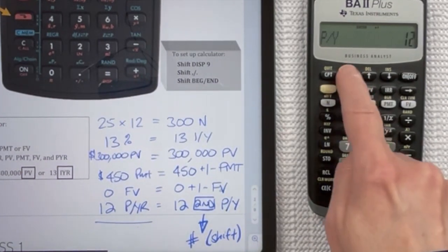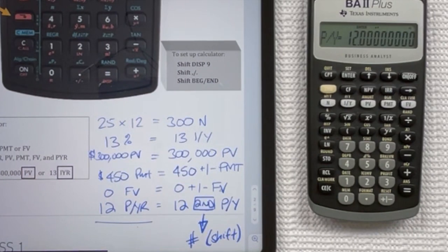We're going to hit 12 and enter, and you see that the PY now has 12 in it. So that's how you enter values into each of these locations.